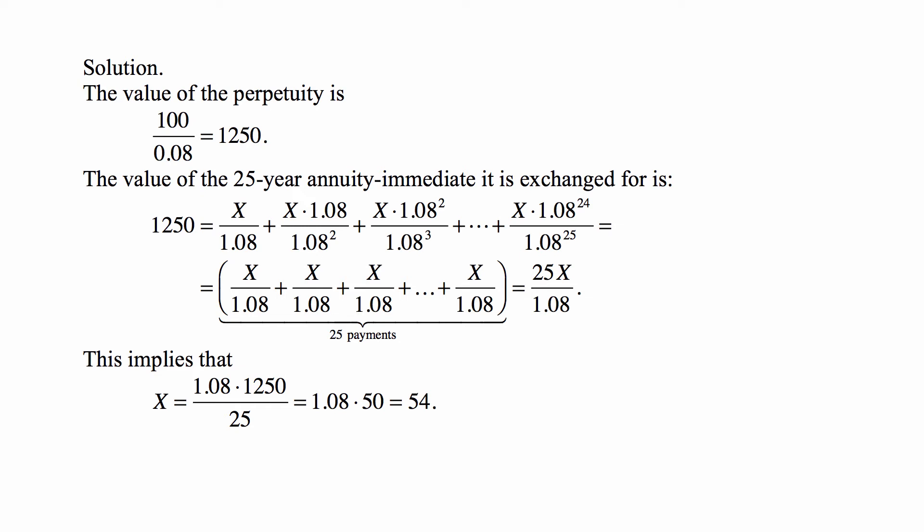The powers of 1.08 cancel out so that every term in the sum equals X/1.08, and there are 25 of them. So the sum equals 25X/1.08 = 1,250, which means X = 1.08 × 1,250/25 = 54.